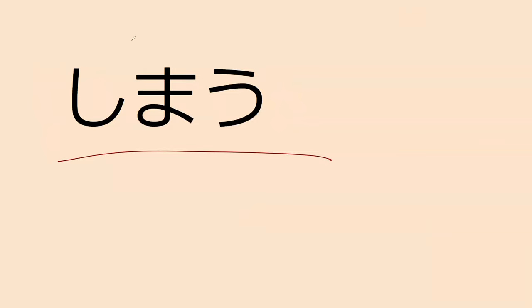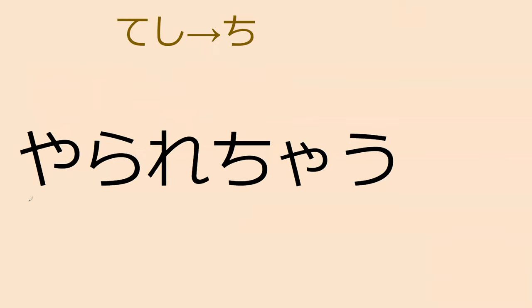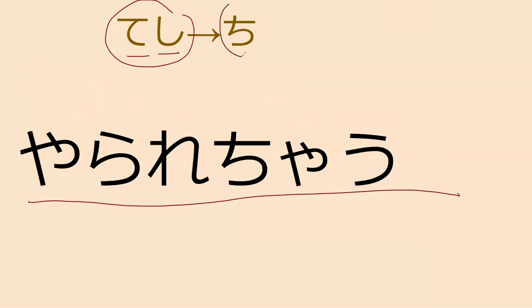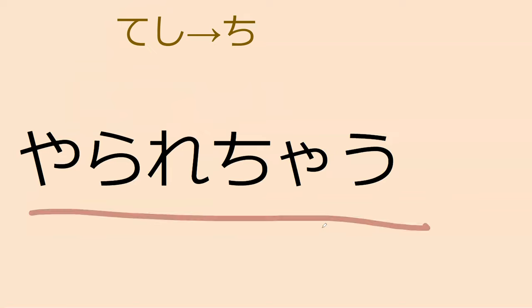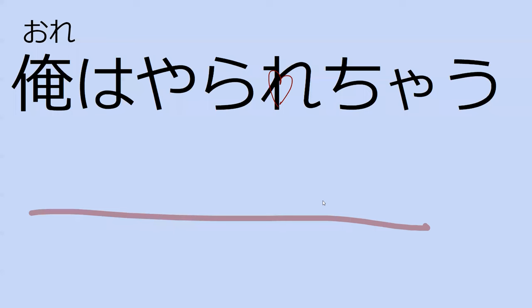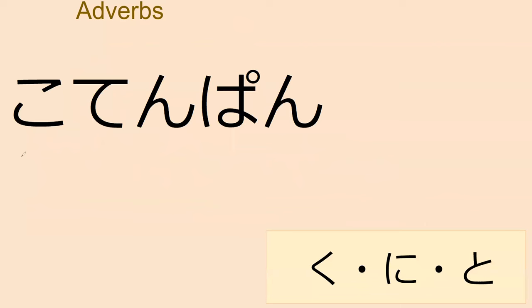Shimau kind of means 'oh no' and has a completely-done type of meaning. So this can be used with yarareru to become yarare chau, meaning 'to be completely done in,' which is made by te-shi turning into chi. So yararete shimau becomes yarare chau. What does yarare chau mean? I got done in — exactly. That is exactly what that means.